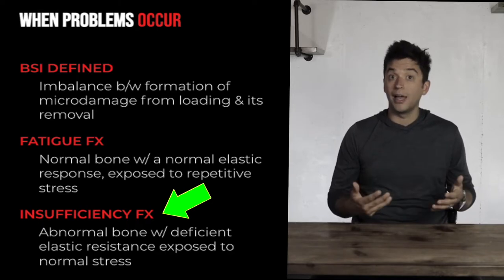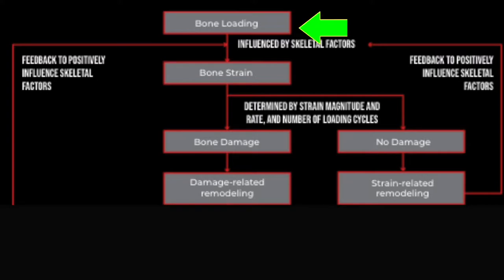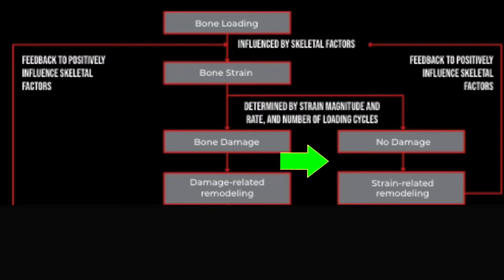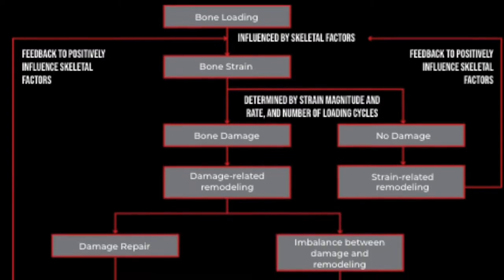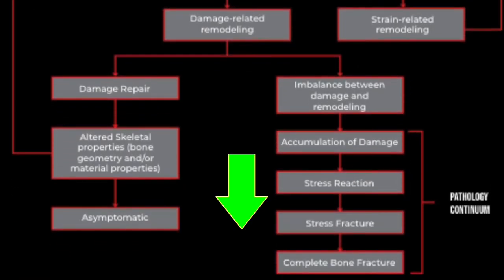When we load our bones, strain occurs. If no damage occurs, normal strain-related remodeling happens and we can load our bones again — this is how they get stronger. But sometimes damage does occur, and when damage-related remodeling is imbalanced, that damage can accrue into a stress reaction, then a stress fracture, and eventually a complete fracture. That's the normal progression of a bone stress injury.